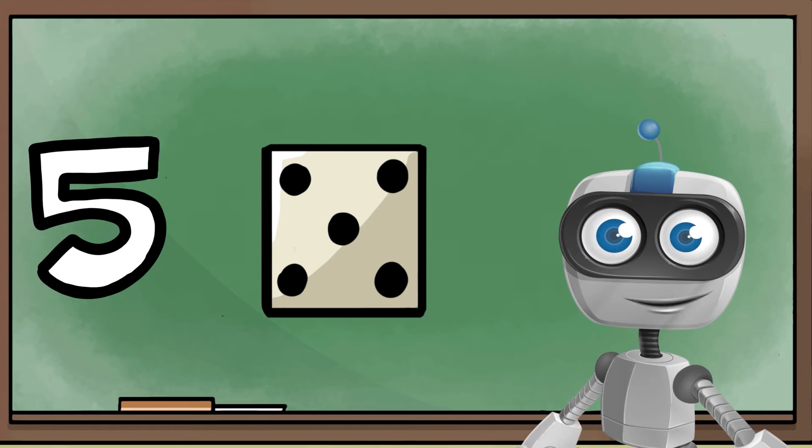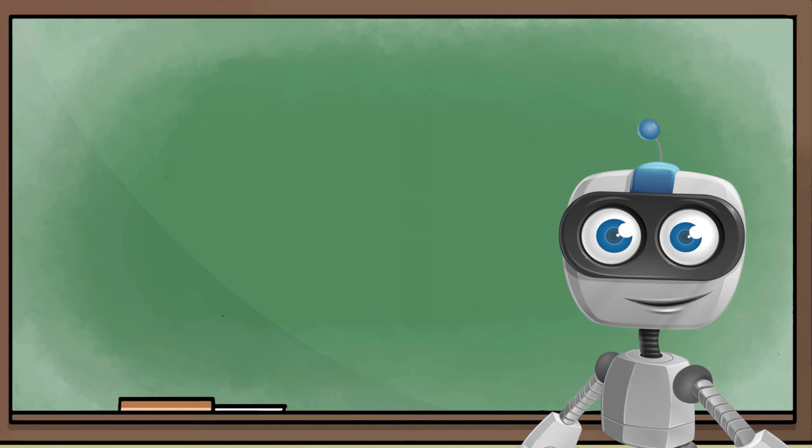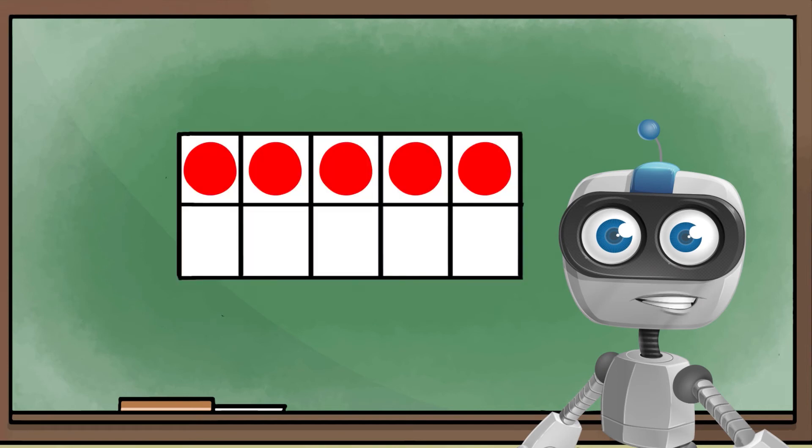This time, I showed five on dice. Another way that mathematicians can show five is using a tool called a ten-frame. A mathematician is a fancy way to say someone who studies math. Look at this ten-frame. How many dots does this ten-frame show?